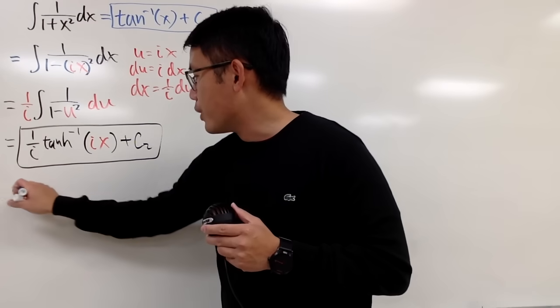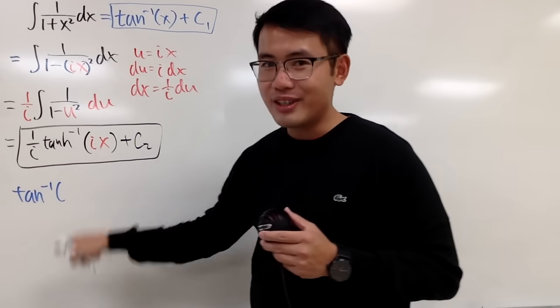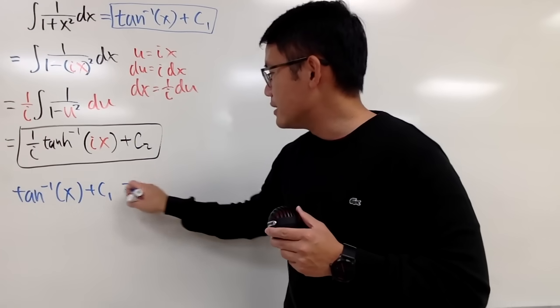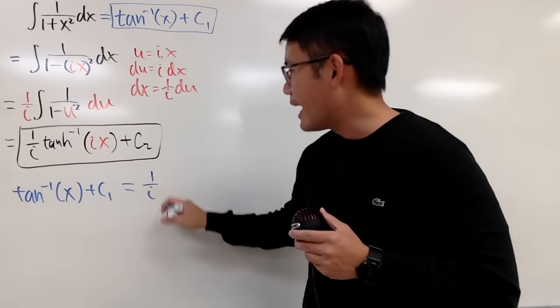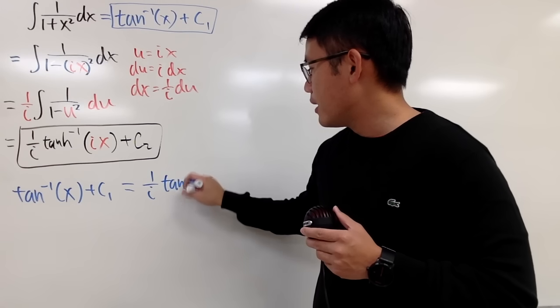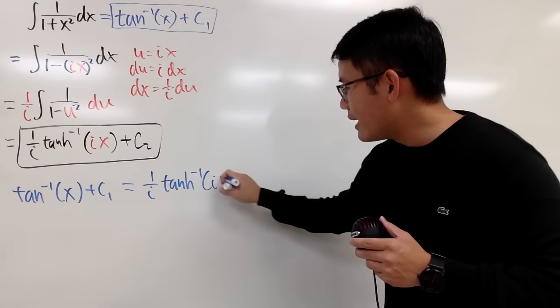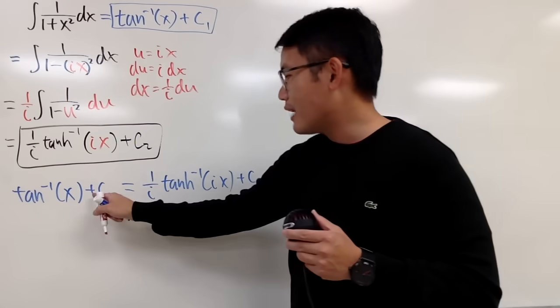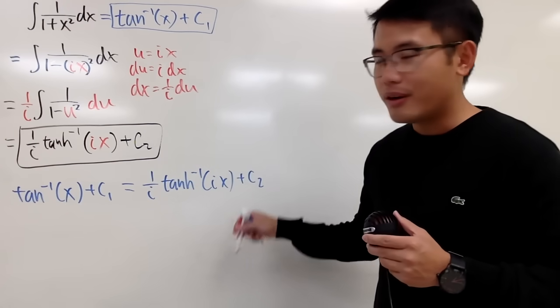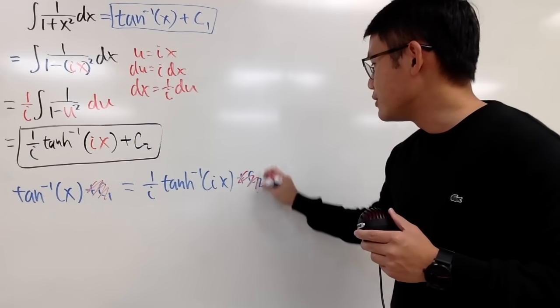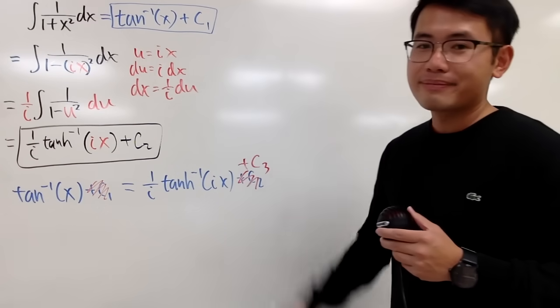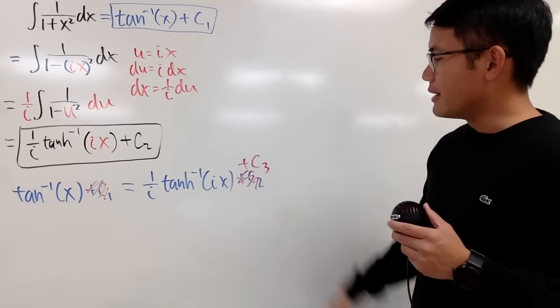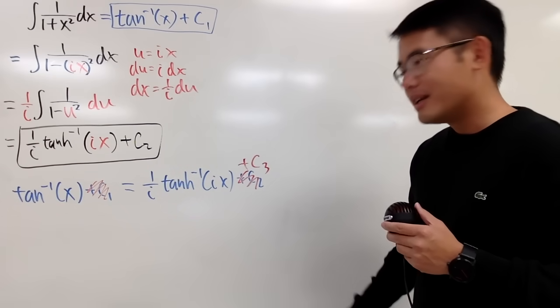We will get the original inverse tangent in the real world like this, the input is x, and then plus c1, we set this equal to be 1 over i and we have the inverse hyperbolic tangent of ix plus c2. You can just get rid of this and get rid of that and just say plus c3. Because a constant, you can just minus c1 on both sides, c2 minus c1 is just another constant.